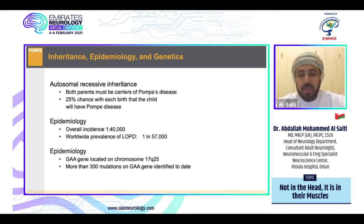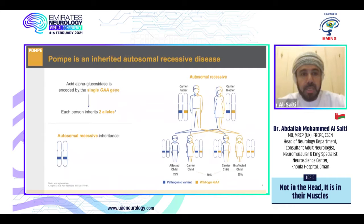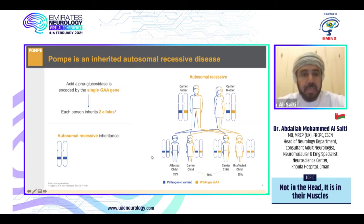The GAA gene is located on chromosome 17q25, with more than 300 mutations on the GAA gene identified to date. Pompe disease is inherited as an autosomal recessive disease — both parents are carriers. 50% of the children will be carriers and 25% chance the child will have the disease. It is an acid alpha-glucosidase encoded by the single GAA gene; each person inherits two alleles.